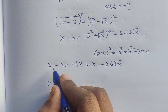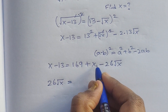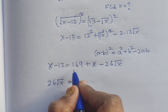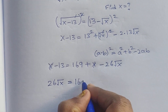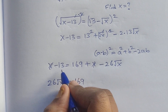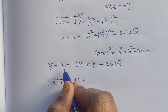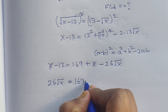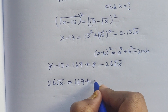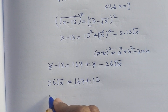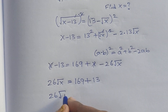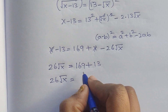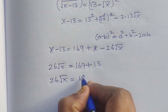The x terms cancel. Moving -13 to the right side makes it positive: 26√x = 169 + 13, which equals 182.